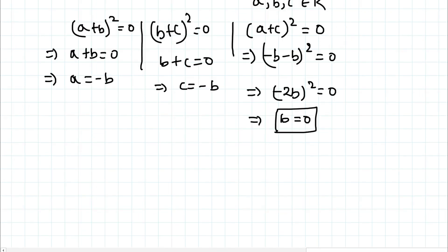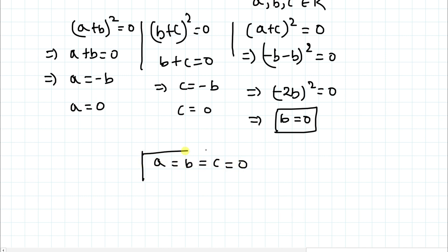Since b = 0, from a = −b we get a = 0, and similarly c = 0. Hence we conclude that a = b = c = 0.